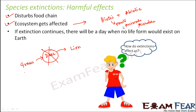If any of these plants, animals, or microbes become extinct, the entire balance of the ecosystem will be affected. If extinction continues, there will be a day when no life form would exist on earth. For example, imagine an aquarium in your house with 20 to 30 fish. As the number of fish keeps reducing, over a longer period of time the number might reduce to zero.